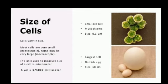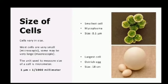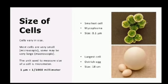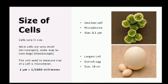Now let's see the size of the cell. Cells vary in size. Most cells are very small — microscopic; 'micro' means small — and we can only see them with the help of a microscope. Some cells may be very large — macroscopic; 'macro' means big.